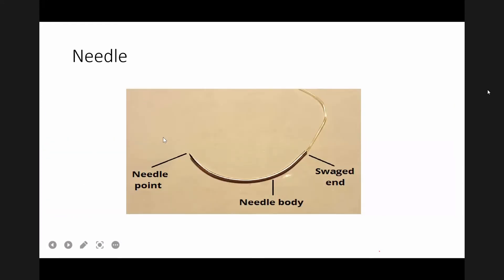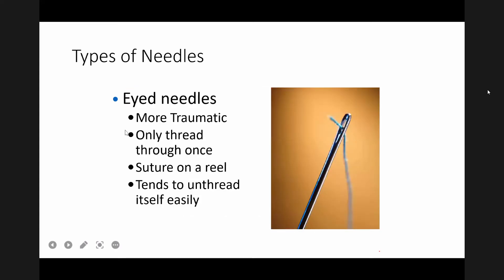Now let's talk about needles. Sutures are usually attached to a needle. The needle has three parts: the end (where the suture attaches), the body, and the tip called the needle point. Eyed needles are more traumatic and only thread through once; sutures on a reel are used with this type, and they tend to unthread easily. Nowadays in practice, we don't commonly use this type of needle, though you may see them in health posts or primary health centers.